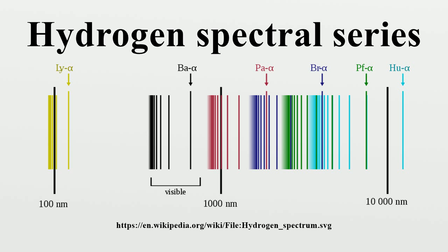The energy differences between levels in the Bohr model, and hence the wavelengths of emitted and absorbed photons, is given by the Rydberg formula, where n is the upper energy level, n is the lower energy level, and R is the Rydberg constant. Meaningful values are returned only when n is greater than n, and the limit of 1 over infinity is taken to be zero.